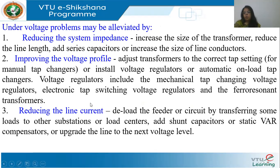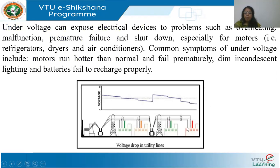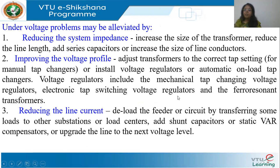To reduce under voltage, which is predominantly caused by drops, reduce the system impedance so the drop is reduced. You can increase the size of the transformer, reduce the line length, add series capacitors, or increase the line conductors — though all these solutions are expensive. Automatic on-load tap changers are another solution: each tap gives around 2% increase, providing limited but useful control.